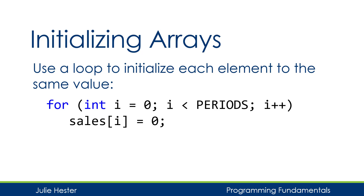Here we have our sales array. Inside the for loop, I'm going to use that iterator variable i as my subscript. Each time the loop executes, i's value is going to change, and that's going to allow me to access a different element in the sales array. So ultimately, when this loop executes, I will have accessed subscripts 0, 1, 2, and 3, and I will have changed the value of those four elements in the sales array to zero.